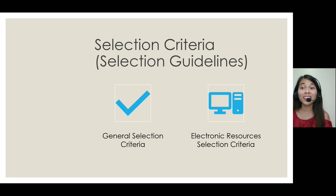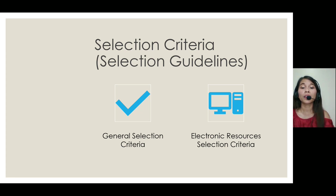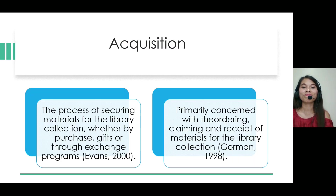This is a very wide topic to discuss, but since we have limited time, maybe we can have a part two to discuss each item further. We need to follow selection criteria or guidelines. We have a general selection criteria and we also have a selection criteria specifically for electronic resources.